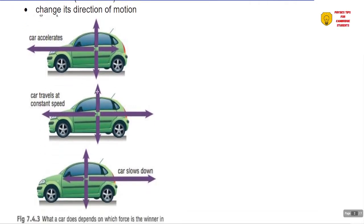Now when you have all the arrows of being of the same length, that is up, down, and then sideways, then the object continues to move with a constant speed.